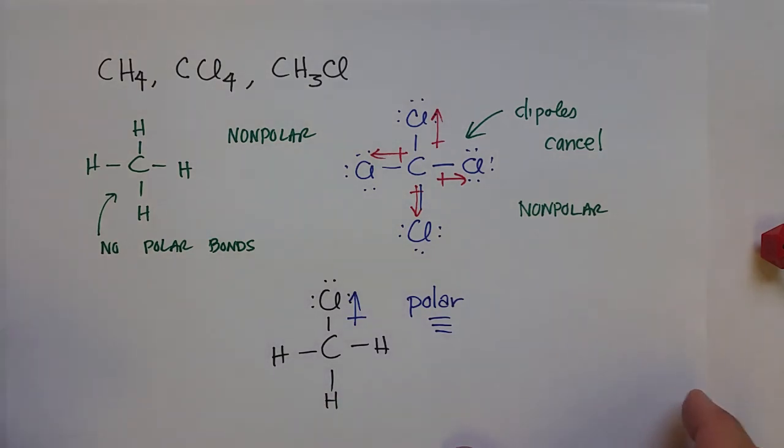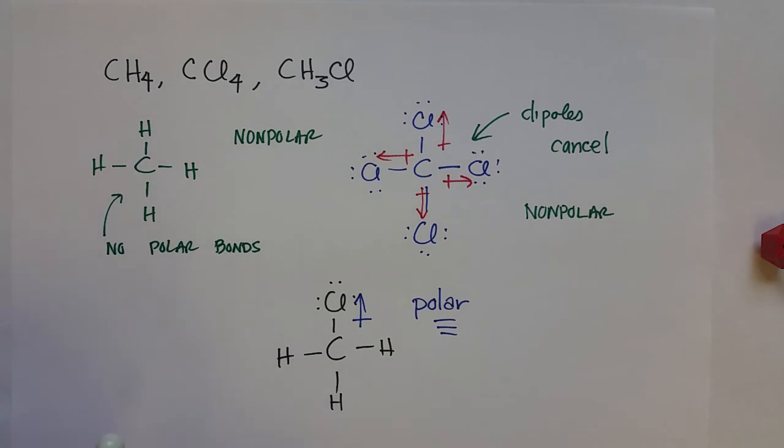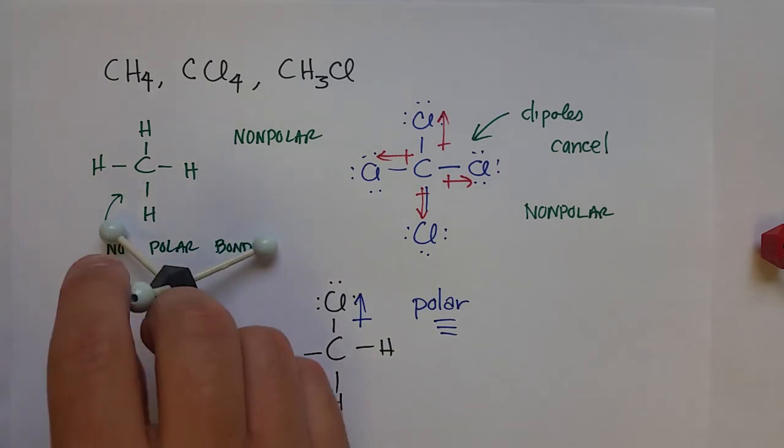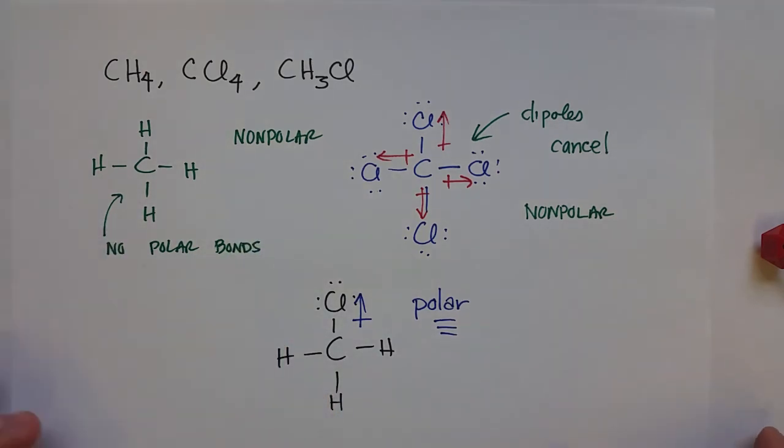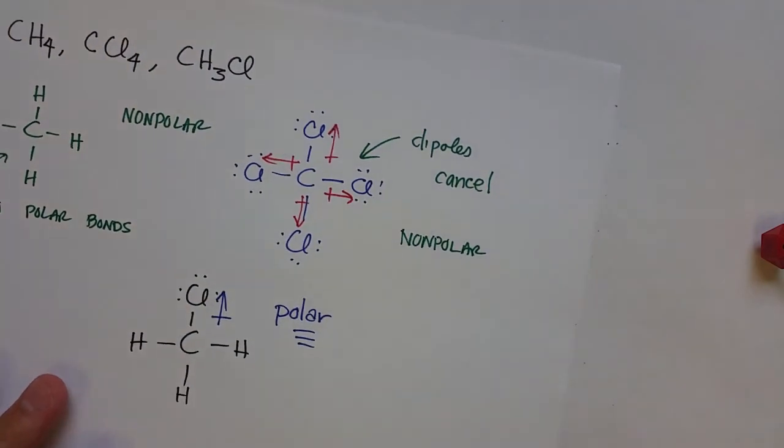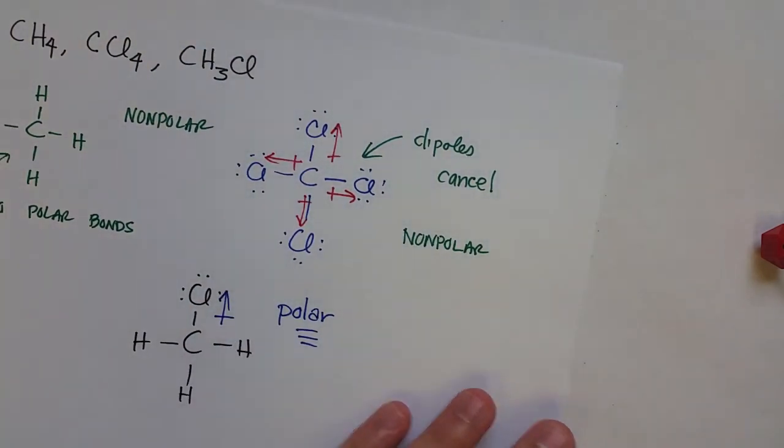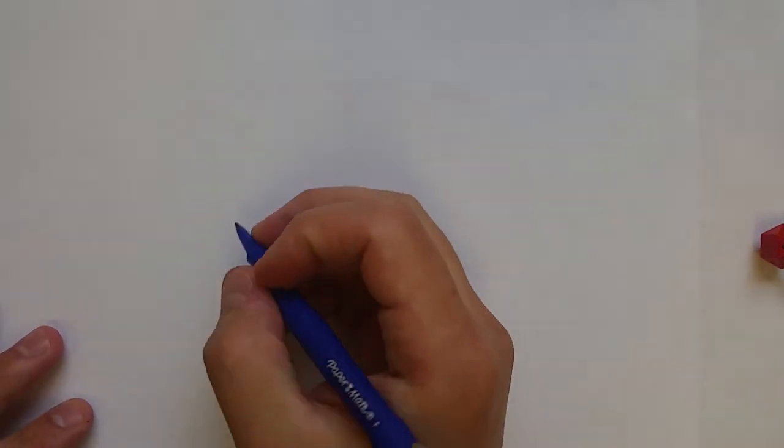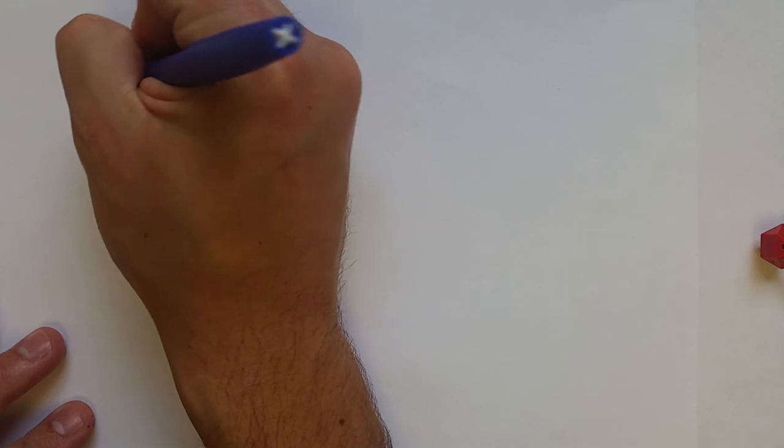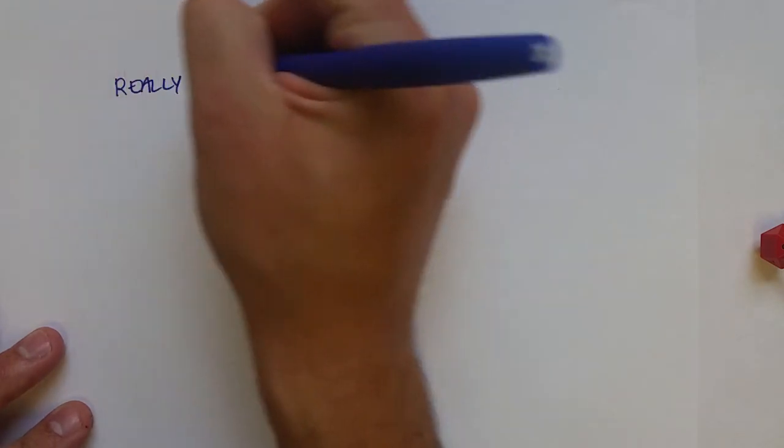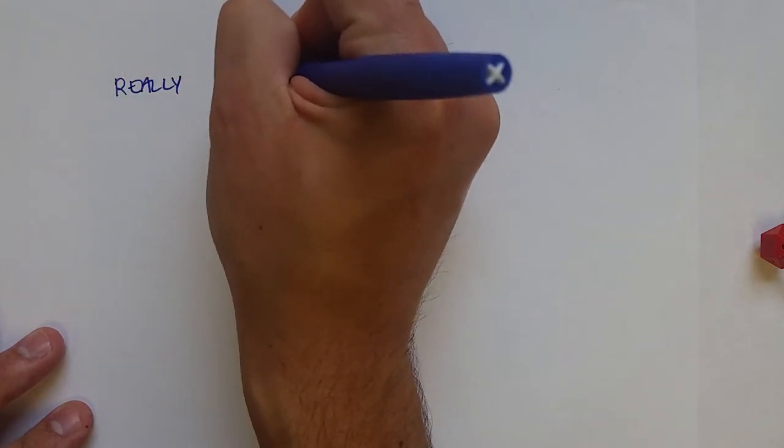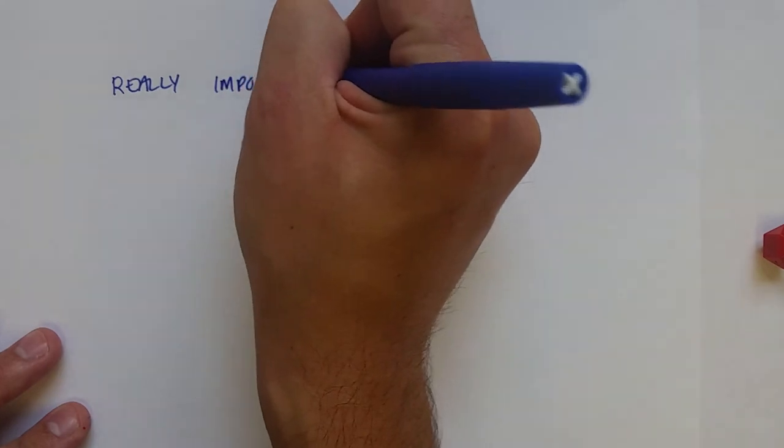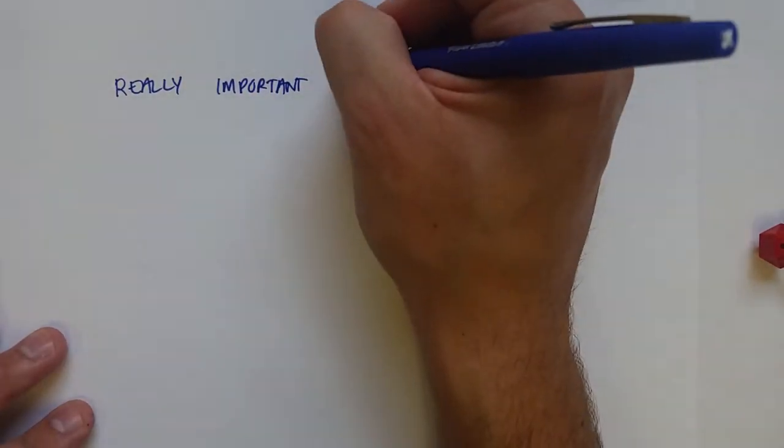And so that's why we needed to talk about geometry before we talked about overall molecule polarity. But in terms of biological chemistry, there are some really important bonds that we need to think about in terms of polarity that will help us out on our discussion. We still need to think about geometry.